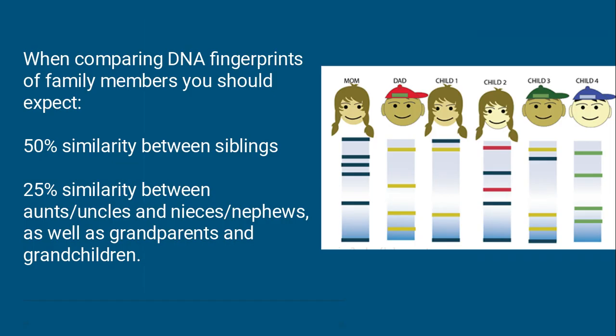And there is a 25% similarity between any aunts, uncles with their nieces and nephews, as well as grandparents with their grandchildren. That means about one out of every four bands should match in those situations. So you can use DNA fingerprints to determine both mother and father, but also different relationships within the family.